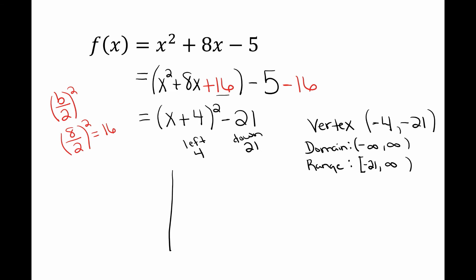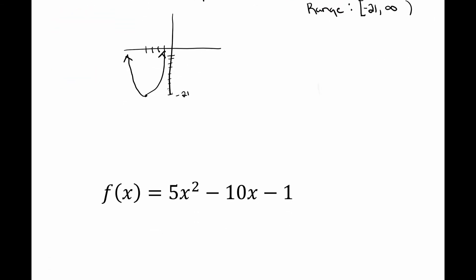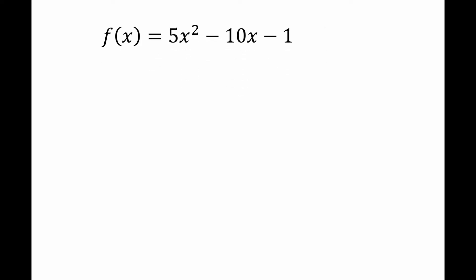My range is going to be bracket negative 21 to infinity. You may not be able to tell this just by looking at it, but if you draw a rough sketch you can tell all these things. Going to the left 4 units and down 21 units, my vertex is at negative 4, negative 21 and it's a u-shape, concave up. From that picture you can see your domain is negative infinity to infinity and your range is bracket negative 21 to infinity.